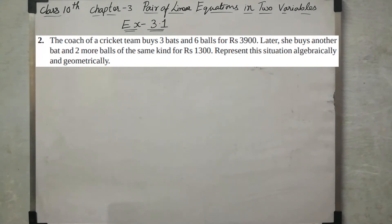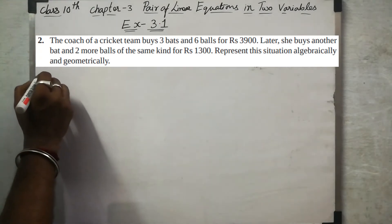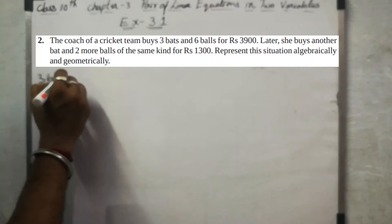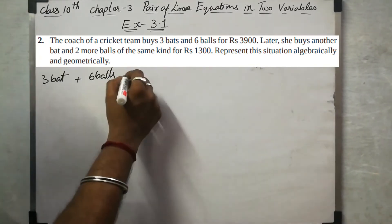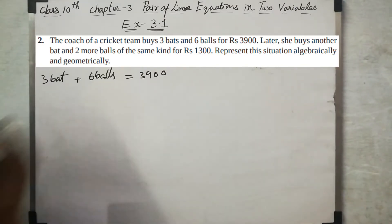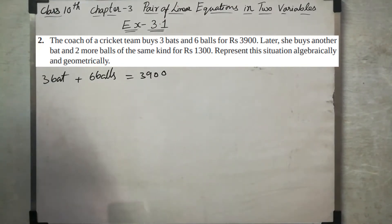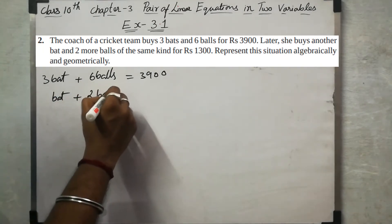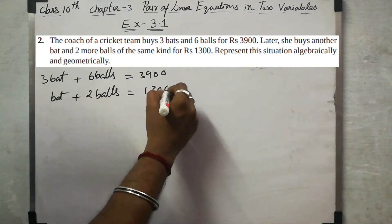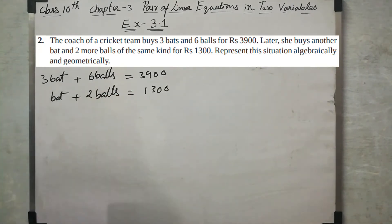So, three bats plus six balls equals rupees 3,900, and one bat plus two balls equals rupees 1,300. Let x denote the cost of a bat and y denote the cost of a ball.